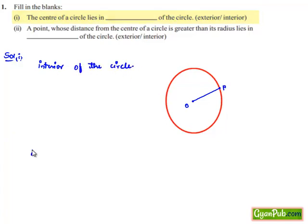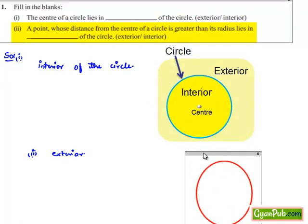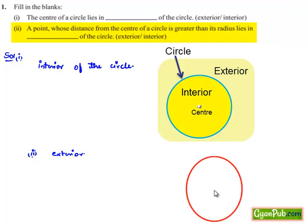Now coming to the second bit: a point whose distance from the center of the circle is greater than radius lies in the circle, that is exterior. Because if we consider a circle as shown in figure with center O, we know that radius is the distance between center and any point of the circle. Let us name the point as P. The distance between O and P is known as radius.